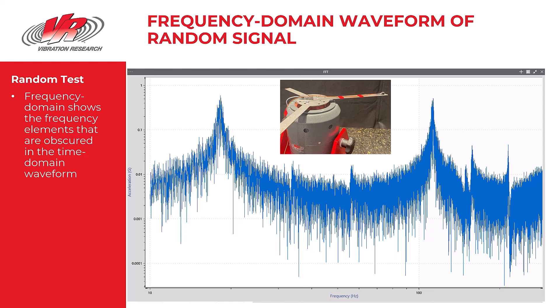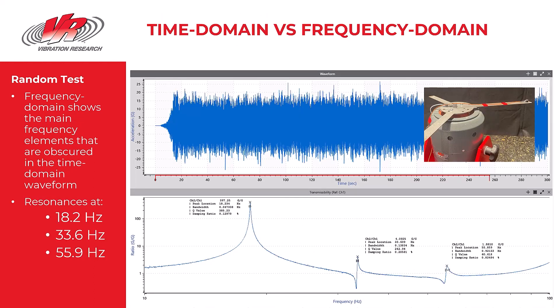In fact, when we look at the transmissibility graph, it becomes very apparent that there is significant vibration at 18 Hz, 33 Hz, and basically 56 Hz, which are the natural resonant frequencies of those three beams. This demonstrates that the time domain is really the combination of many sinusoidal waves, each sine wave with its own particular frequency and amplitude, all combined to make a very complex time domain waveform. Converting the time domain waveform to the frequency domain is significantly helpful in identifying what specific frequencies of vibration are found in the signal.